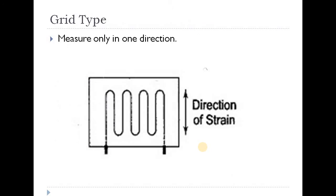Grid type measures strain in only one direction — it is a single-direction measurement. If you have a grid type strain gauge, you can only measure strain in one direction.